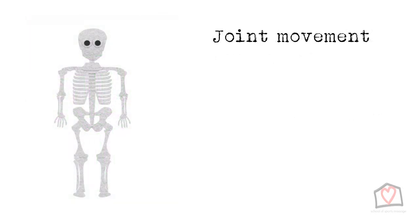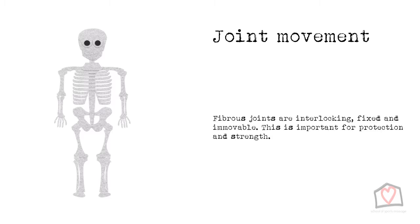Each joint is further categorised by the degree of movement it has. The first type to look at are fibrous joints. These are interlocking, fixed, and therefore immovable, such as the plates of the skull. This is particularly important for protection and strength.